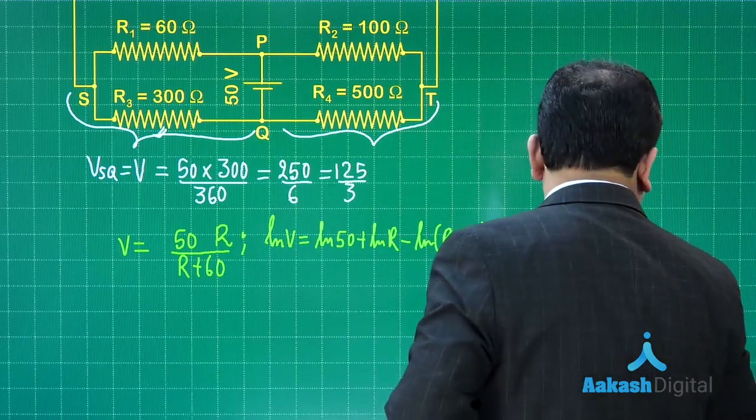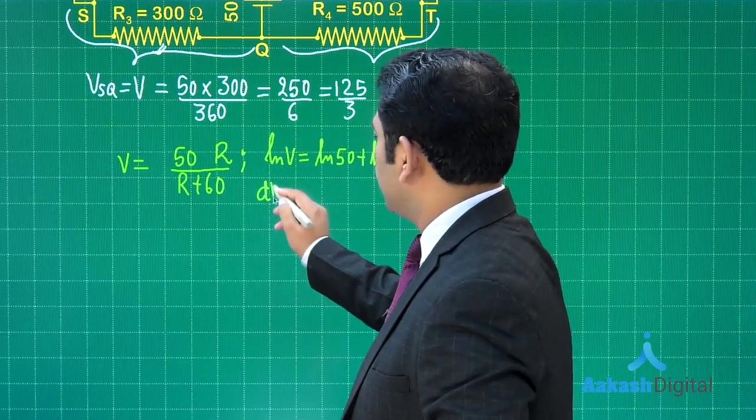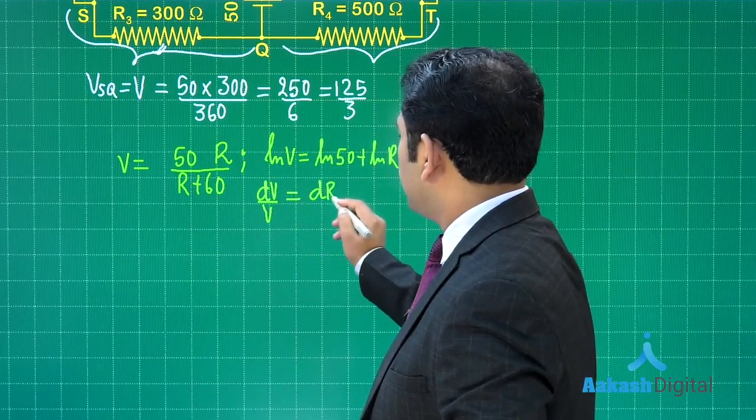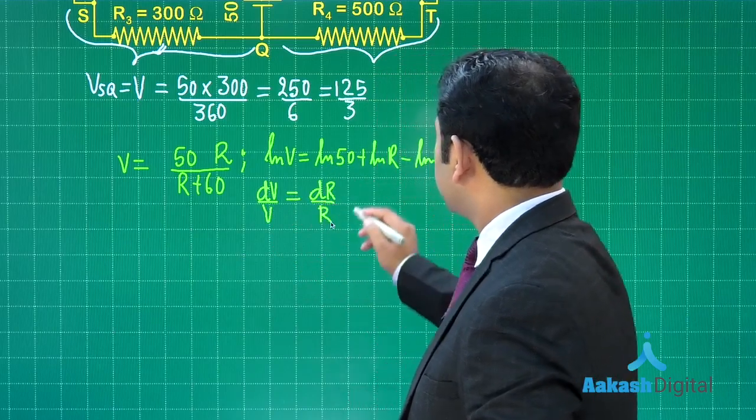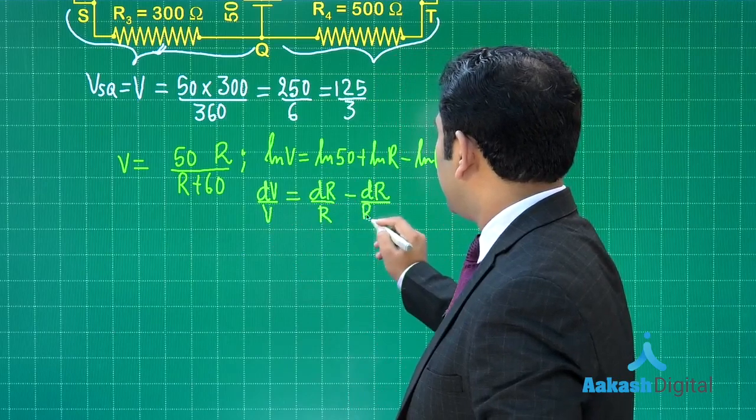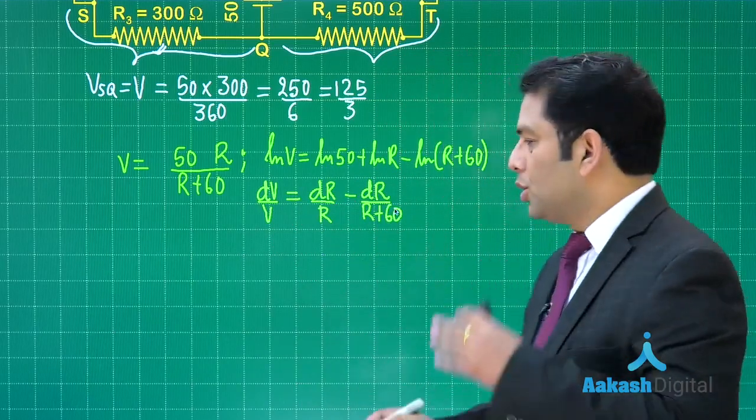And then let me go for the derivative. So this is going to be dV by V, that is 0. This will be dr by r, and this is going to be minus dr by (r plus 60). That is a straightforward one.